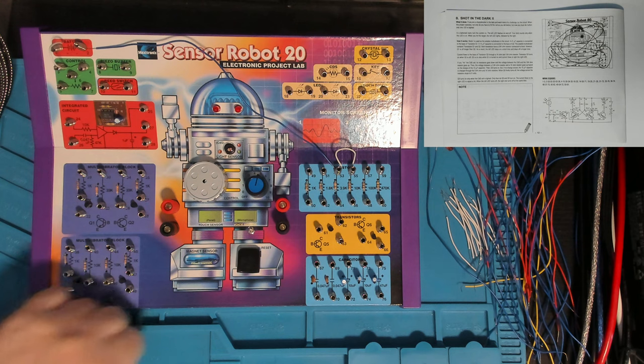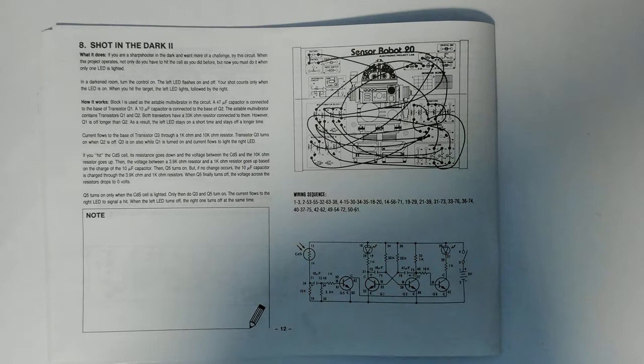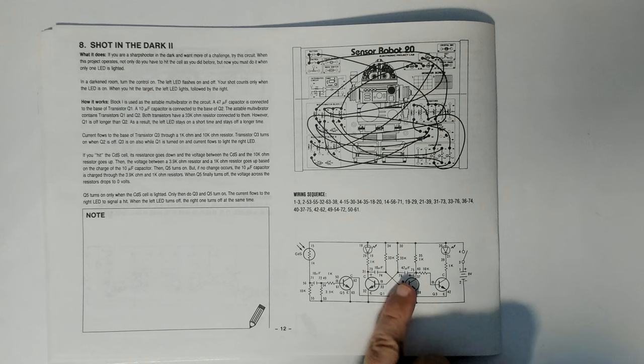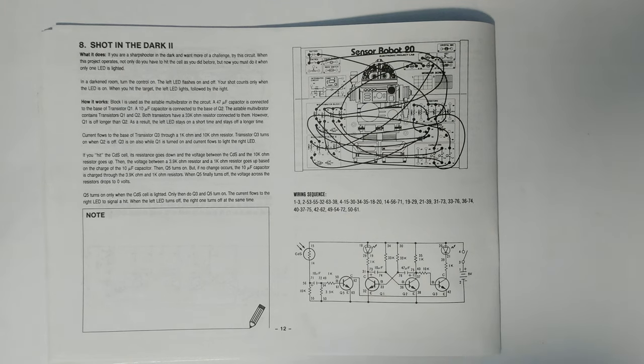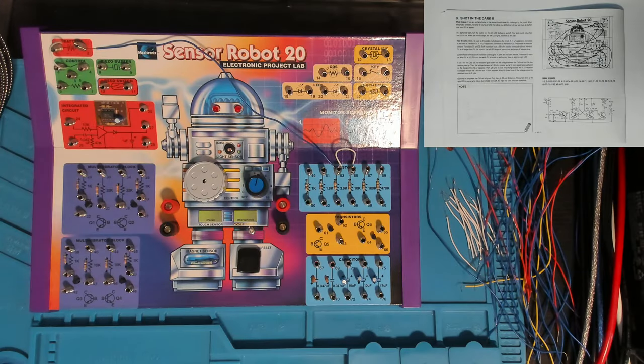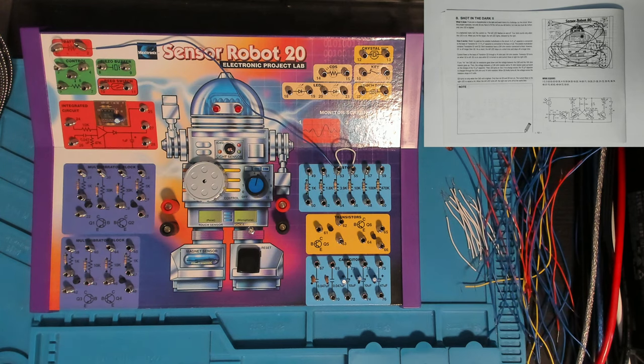But it's an asymmetrical one because, if I just throw you back over to the thing, as you can see, Q1 is connected to a 47 microfarad capacitor, whereas Q2 is connected to a 10 microfarad capacitor. They did mention that in the instructions and that asymmetry means that the flashing rate is not symmetrical. One stays longer than the other.